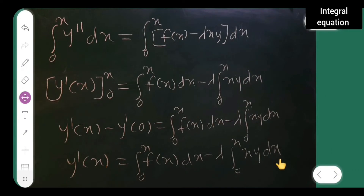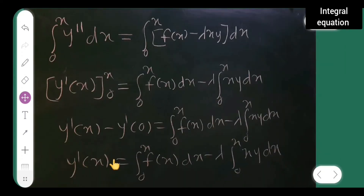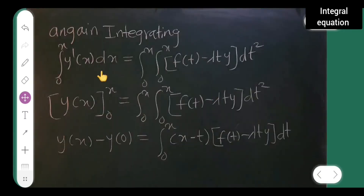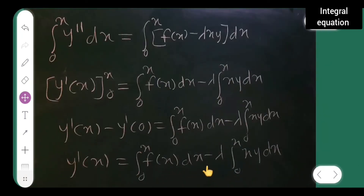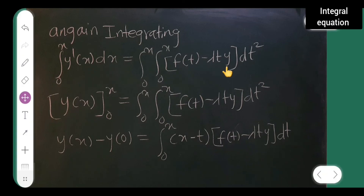Now I integrate again with respect to x from 0 to x: integral from 0 to x of y dash of x dx equals integral from 0 to x of integral from 0 to x of (f of t minus lambda t y) dt, where I've changed the variable from x to t inside the inner integral.